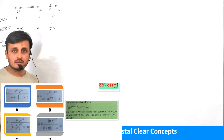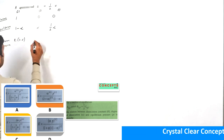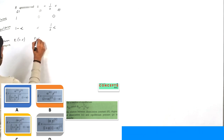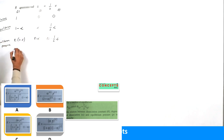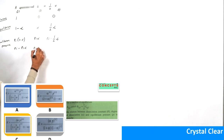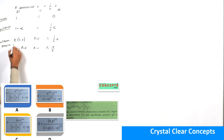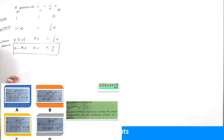Pi is the initial pressure we consider. So the equilibrium pressure of A becomes Pi × (1 - α), B becomes Pi × α, and C becomes Pi × (1/2) × α, which simplifies to Pi·α/2. These are the equilibrium pressures of the individual components present in the reaction mixture.